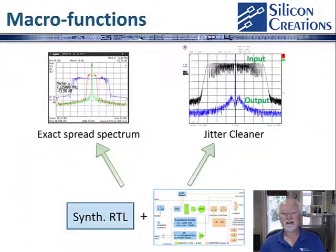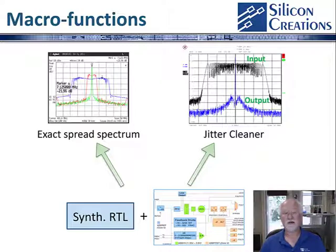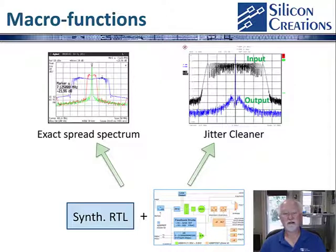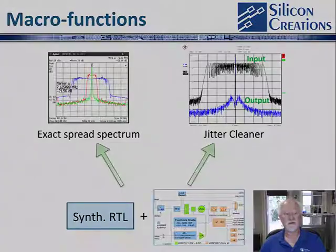The functionality of our fractional ring PLL can be further extended with synthesizable RTL blocks that we can provide to work with our PLL. Two of the key functions that we're supporting include exact spread spectrum modulation and a jitter attenuator PLL with loop bandwidth programmable below 10 Hz.